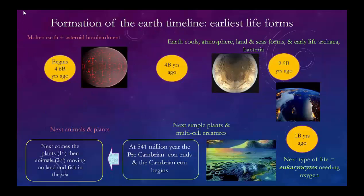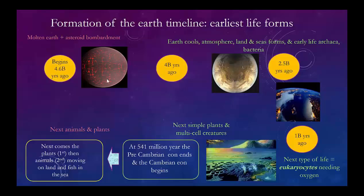The Earth started 4.6 billion years ago. It's a planet, but still molten and on fire, existing at what we call the habitable zone — just the right distance from the sun. Along the way it starts to cool, the early atmosphere forms but it doesn't have any oxygen. Then the land and seas form. We're bombarded by the asteroid Theia, which brought carbon and water necessary for life, hitting about 4 billion years ago.